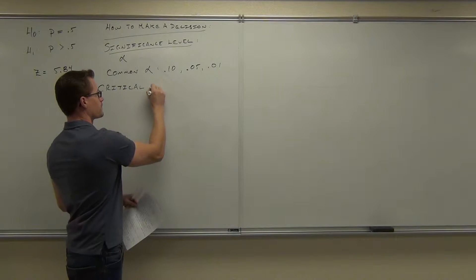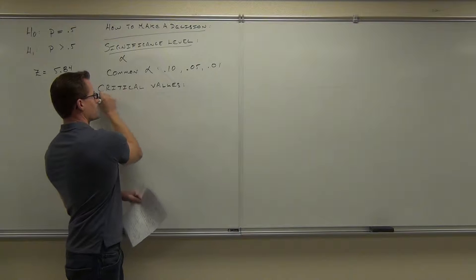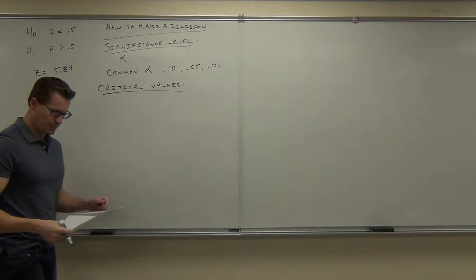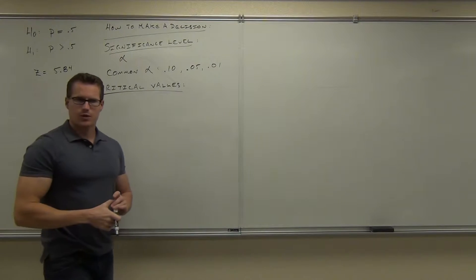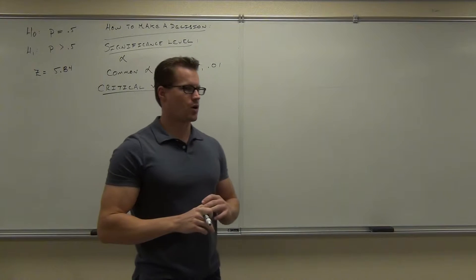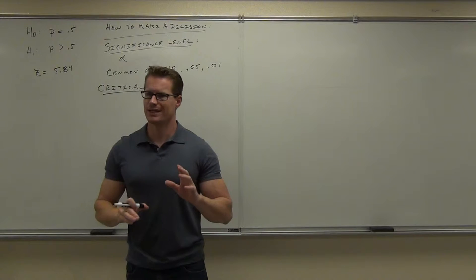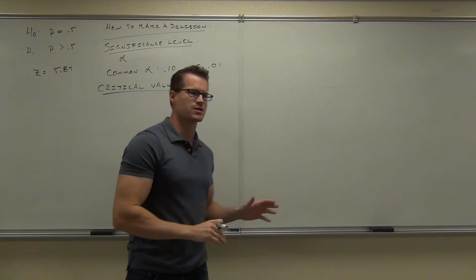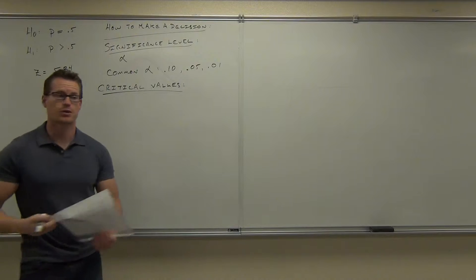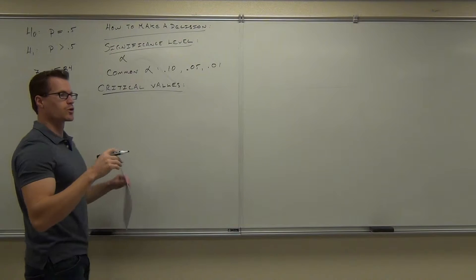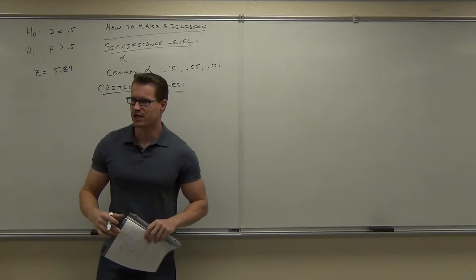So critical values. Only this time, the critical values are going to separate what we're going to call the rejection region from the fail-to-reject region. I might have mentioned that before, but it didn't make a whole lot of sense back in Chapter 7 because we never really worked with it. Now we get to work with it. So a critical value separates what we're going to call the rejection region from the fail-to-reject region.